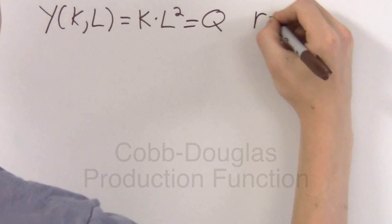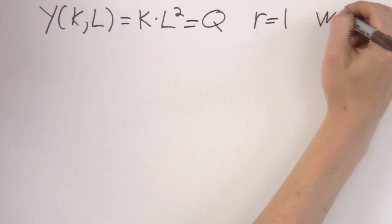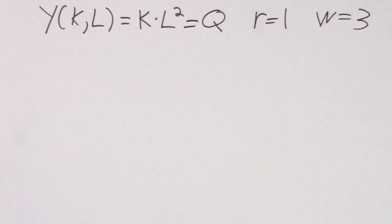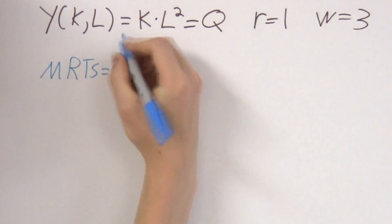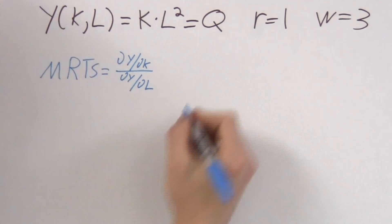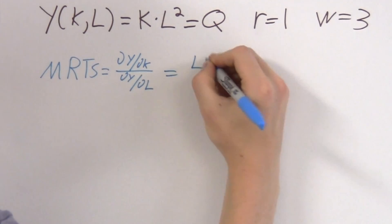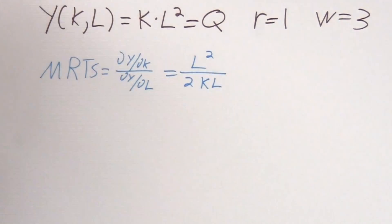Let's say that the rental price of capital, r, is 1, and that the wage of labor, w, is 3. What's the optimal combination of inputs if you want to produce q cars? Using the MRTS relationship that we developed before, we can calculate the MRTS. The partial derivative of y with respect to k is l squared, and the partial derivative with respect to l is 2kl. Dividing these, we get that the MRTS is l over 2k.